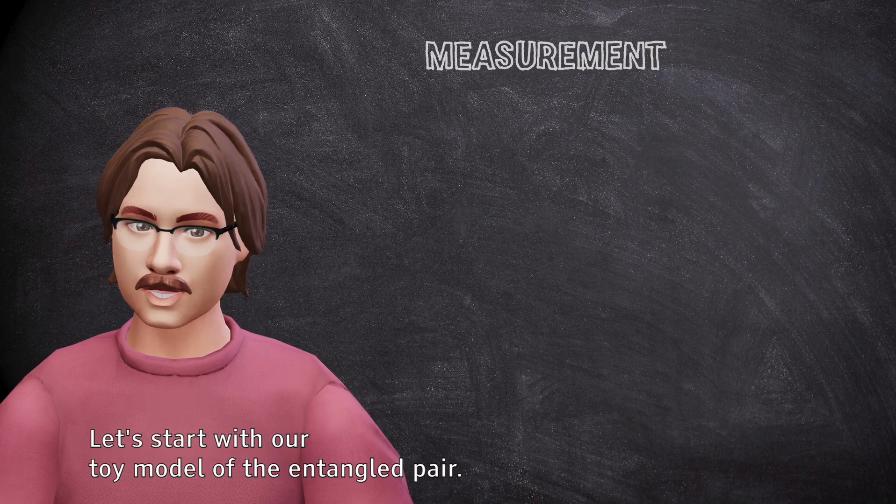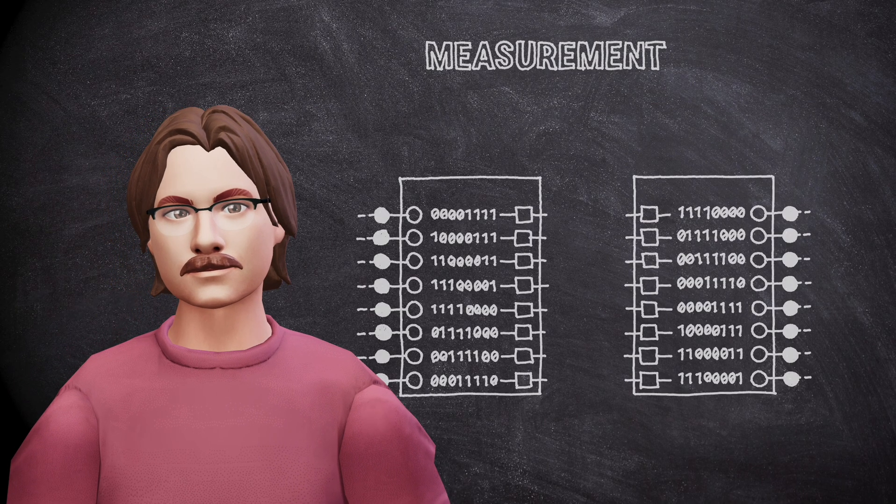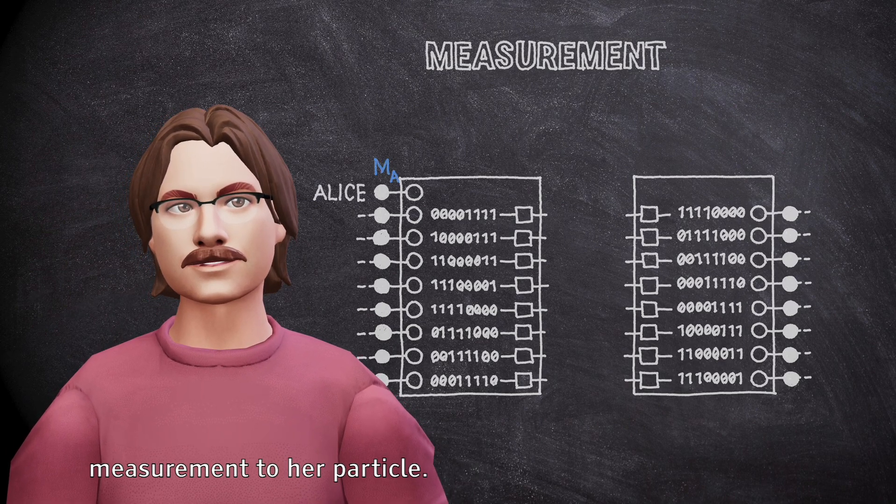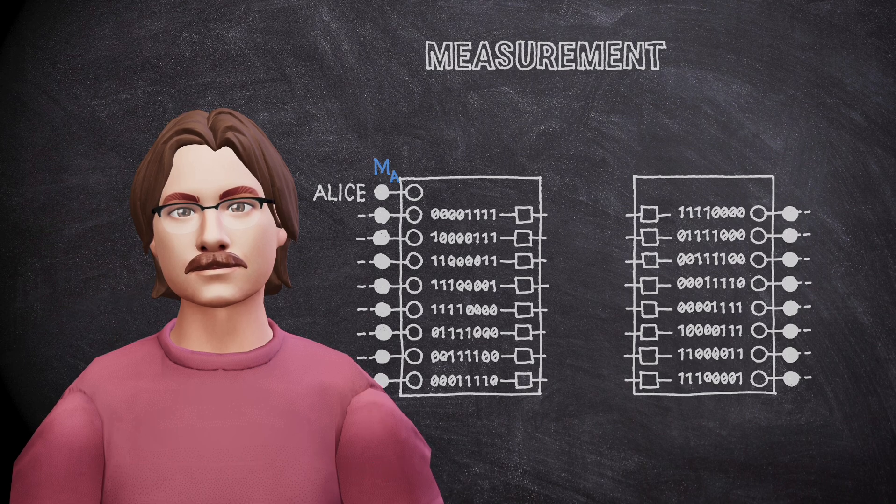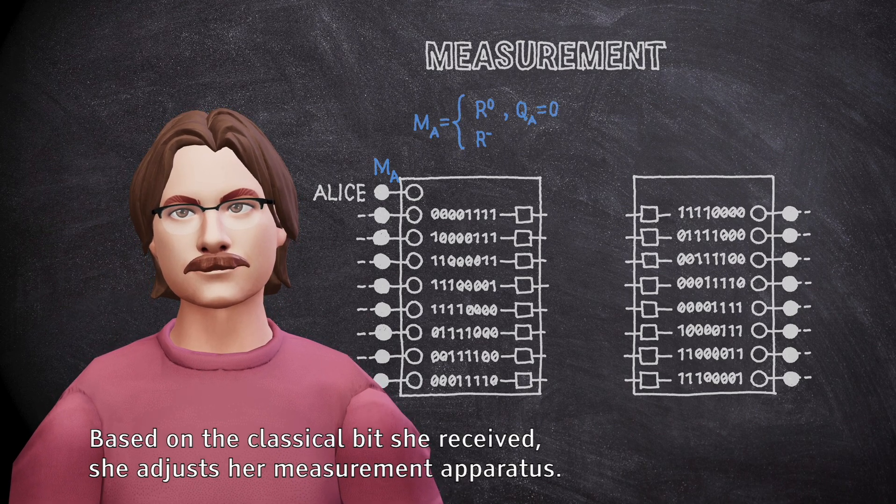Next we will take a look at how Alice and Bob make their measurements. Let's start with our toy model of the entangled pair. Using her Stern-Gerlach machine, Alice is going to make a quantum measurement to her particle. Based on the classical bit she received, she adjusts her measurement apparatus.